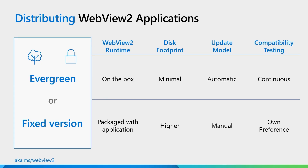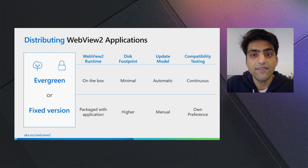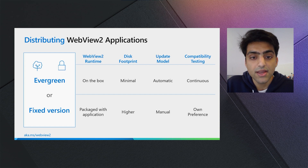Last year at Ignite, we introduced the WebView2 runtime, or independent browser bits that WebView2 applications require to run. Now there are two ways to distribute WebView2 applications with the WebView2 runtime. The first is the evergreen distribution mode, and the second is a fixed distribution mode. In the evergreen distribution mode, WebView2 applications point to a shared WebView2 runtime on the box. Because it is a shared component, there is just a minimal additional disk footprint.